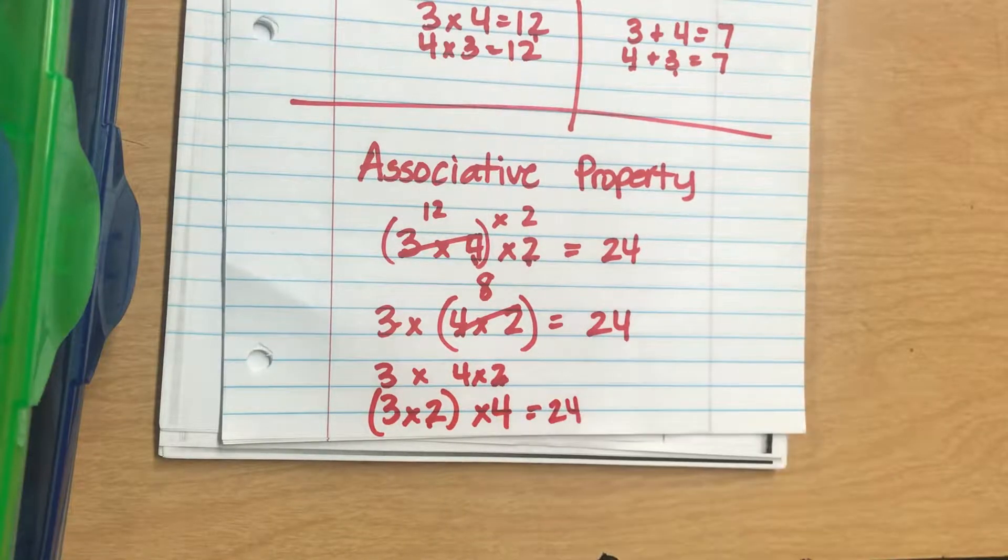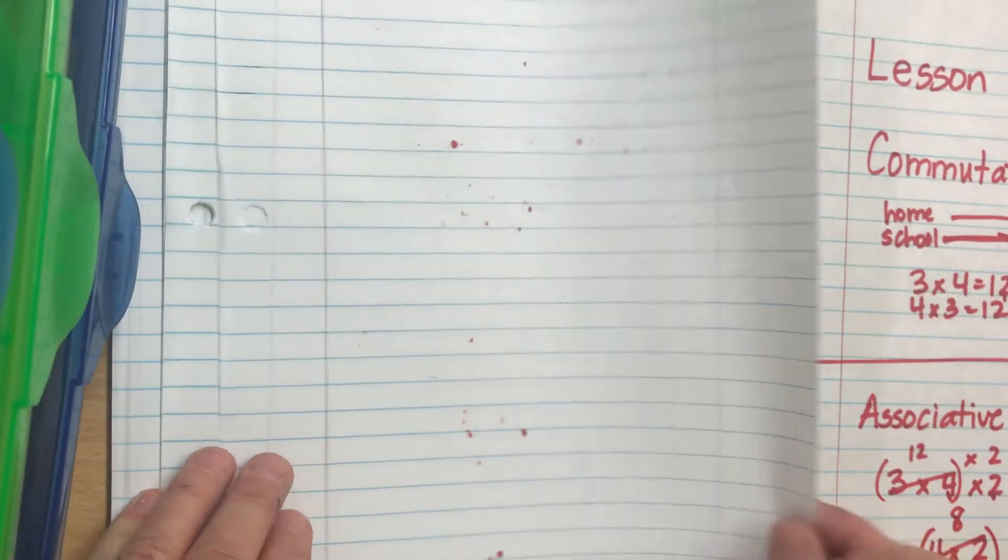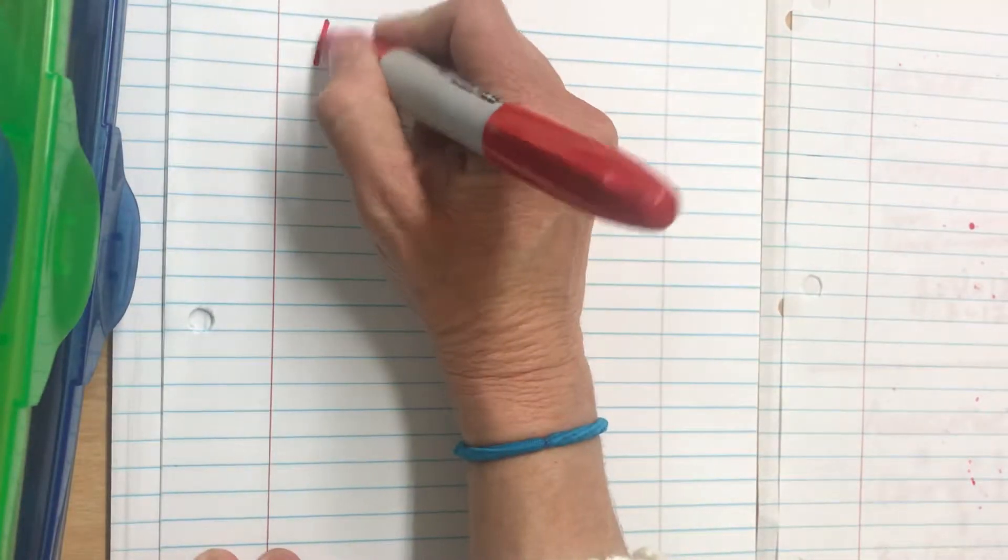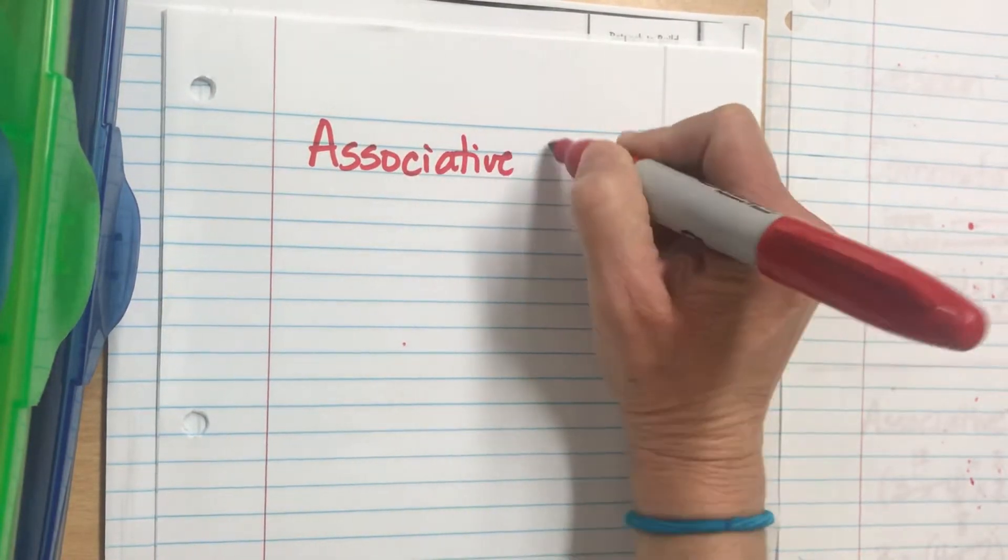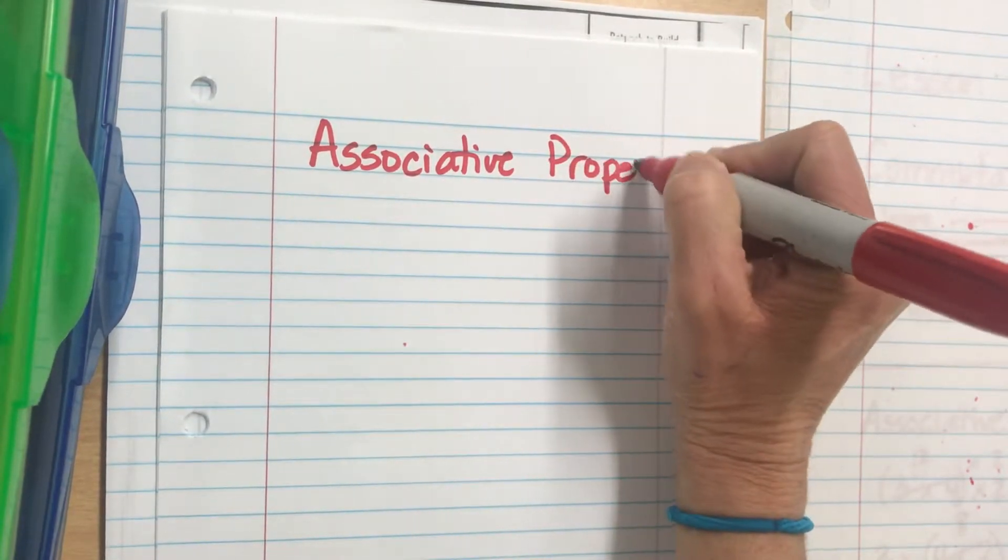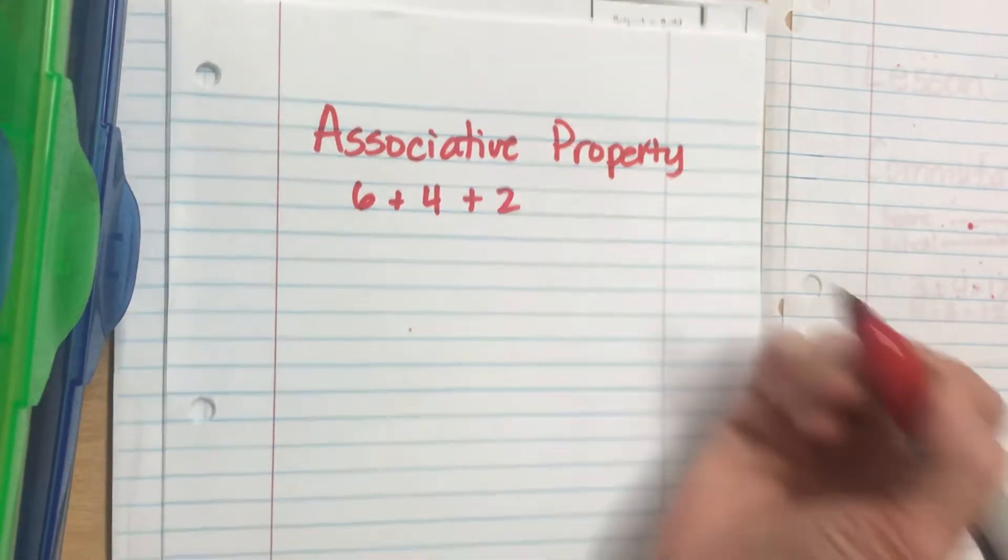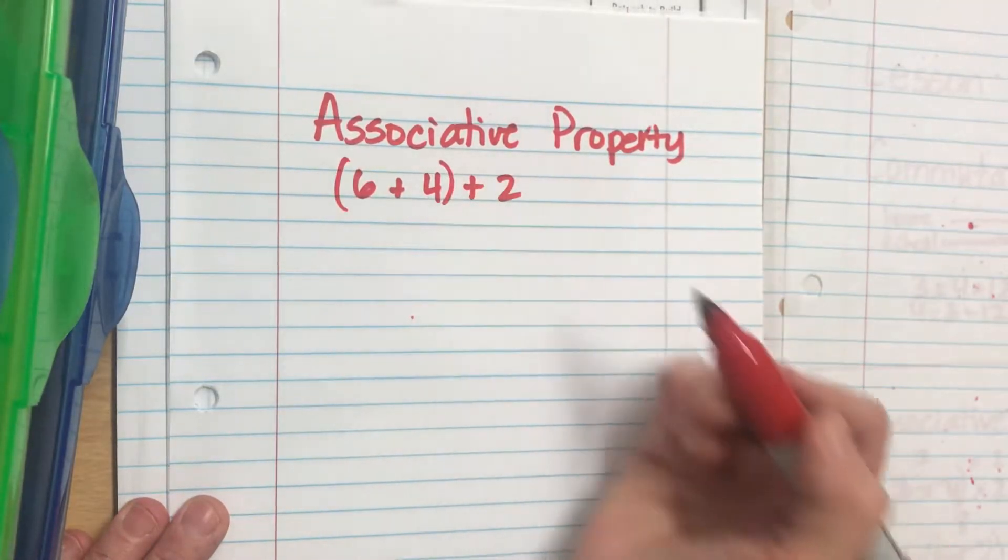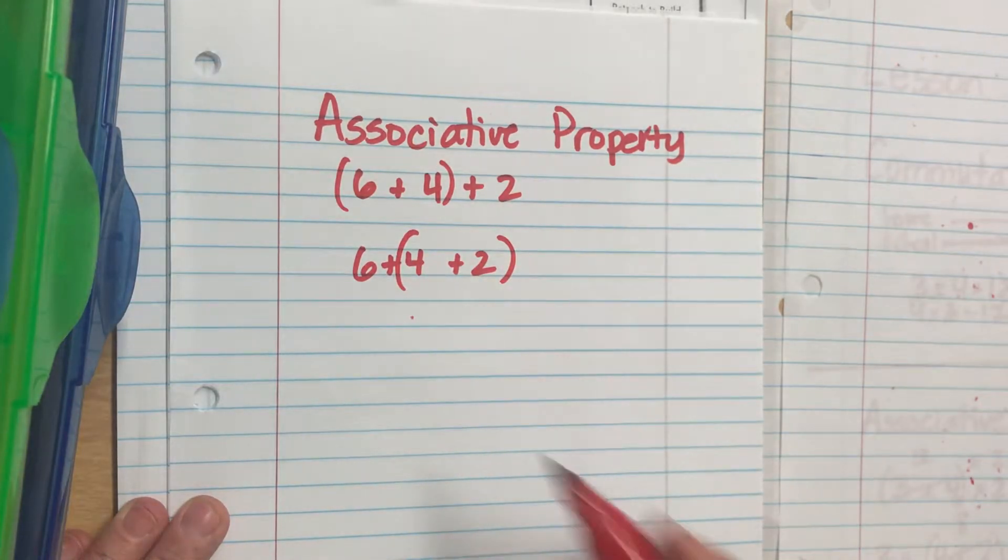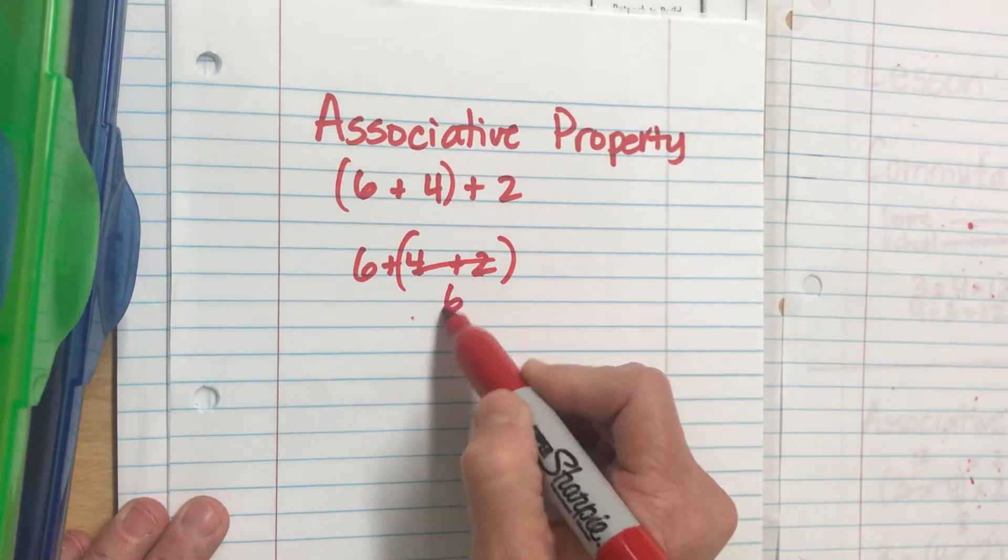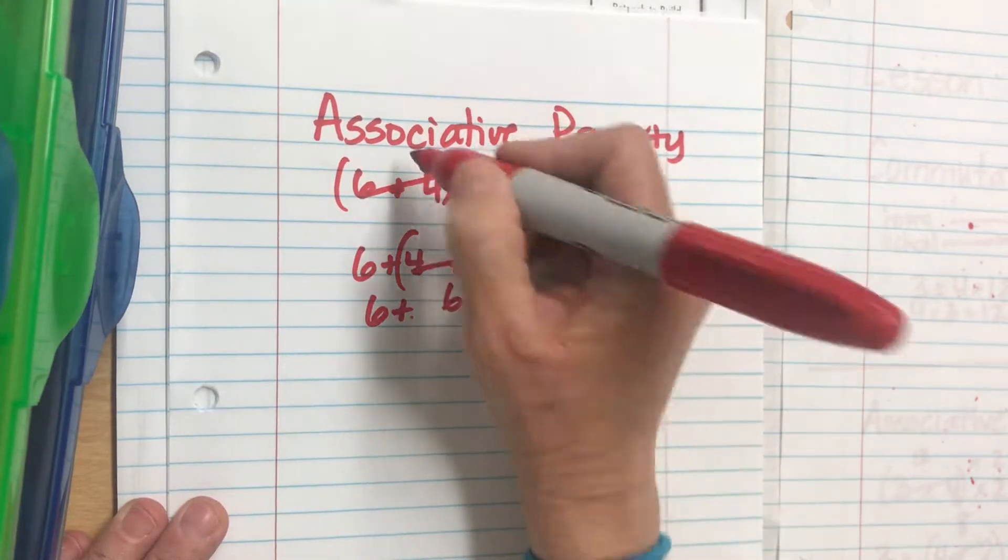The same thing holds true for addition. So for our associative property of addition, I have 6 plus 4 plus 2. I can do 6 plus 4 first, or I can do 4 plus 2 first. This is going to be 6 plus 6 equals 12, and this is going to be 10 plus 2 equals 12.